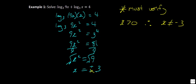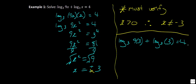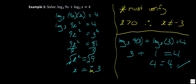So x is not equal to negative 3 — we're rejecting that negative value. Let's verify that x equals 3. Substituting: log base 3 of 27 plus log base 3 of 3 equals 4. Log base 3 of 27 is 3, and log base 3 of 3 is 1. So 3 plus 1 equals 4 — 4 equals 4. We're confident our answer is correct.